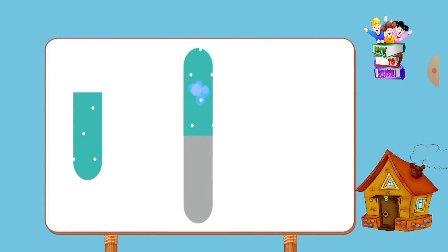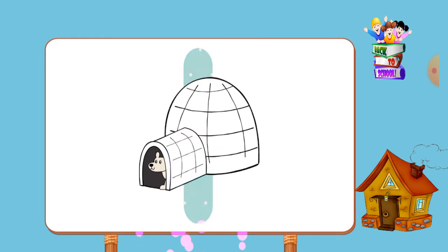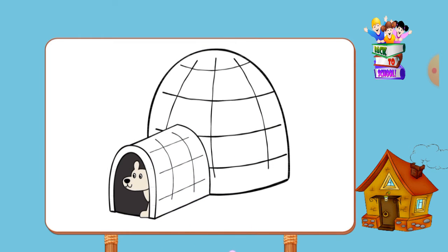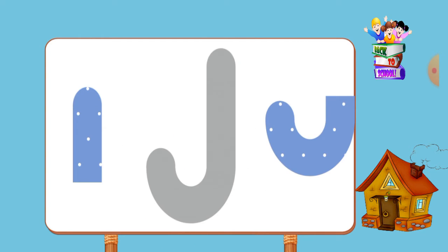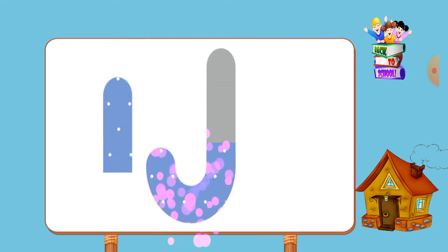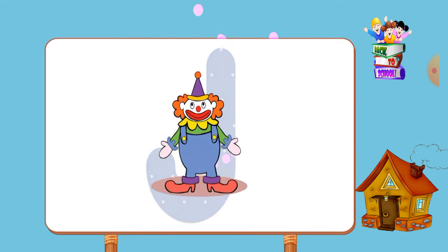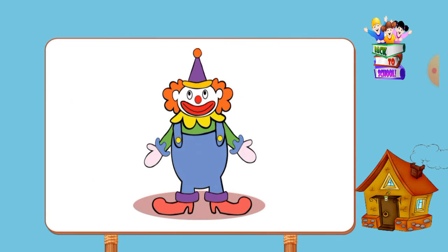Match the pictures to their shadows. I, i, igloo. Match the pictures to their shadows. J, j, walker.